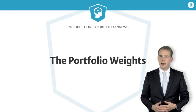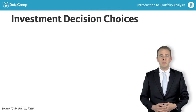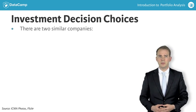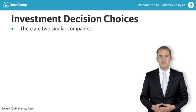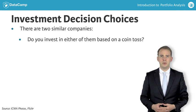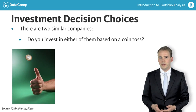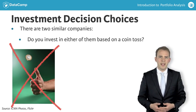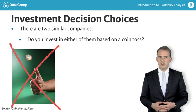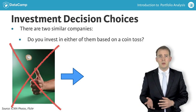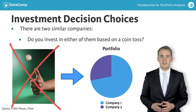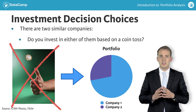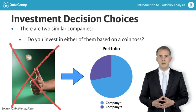In the previous example I intentionally chose two companies selling a similar product. Still the analysis showed that the value of the stocks can diverge over time. So how to decide between those two companies? Flip a coin? No. In most cases the rational decision is not to invest in either one or the other, but to reduce our risk by holding a portfolio that is invested in both of them. This is called diversifying your risks.